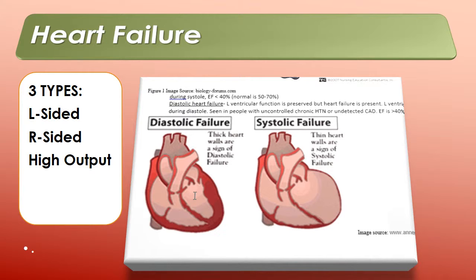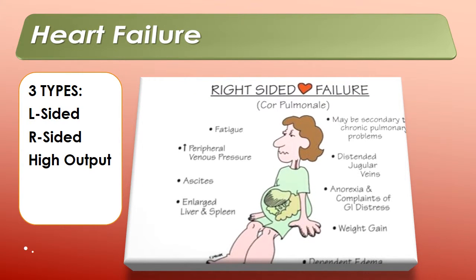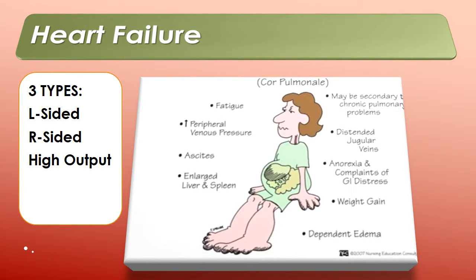Moving to right-sided heart failure: the ventricles can't empty completely, resulting in increased pressure in the venous system, peripheral edema, and low cardiac output. Causes include right or left ventricular MI, pulmonary hypertension, and other conditions. As depicted in the picture, dependent edema and weight gain may be present.